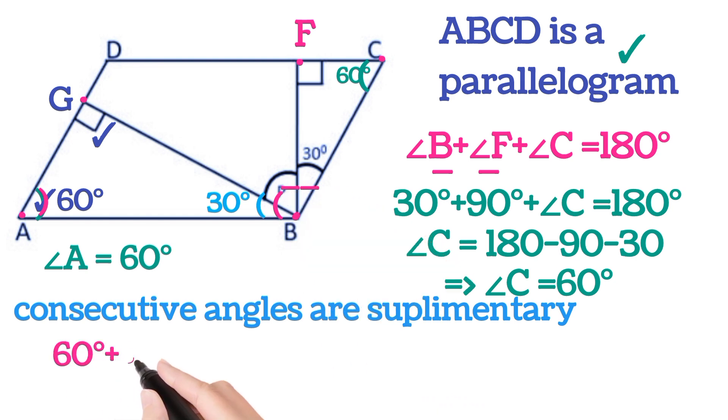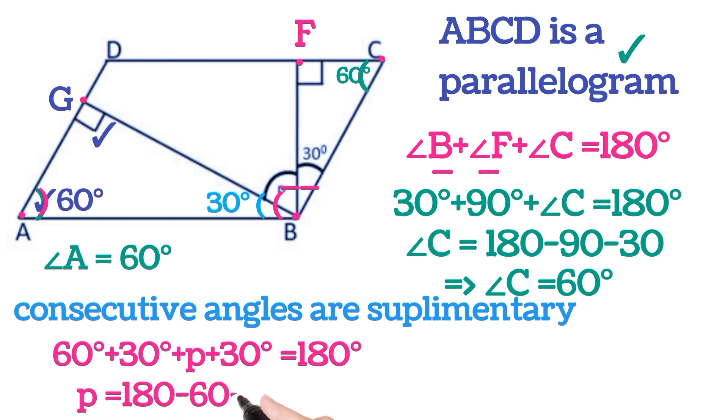That is 60 plus 30 plus p plus 30 is equal to 180 degrees. Or we can write p is equal to 180 minus 60 minus 30 and minus 30. This implies p is equal to 60 degrees. This was asked in the question.